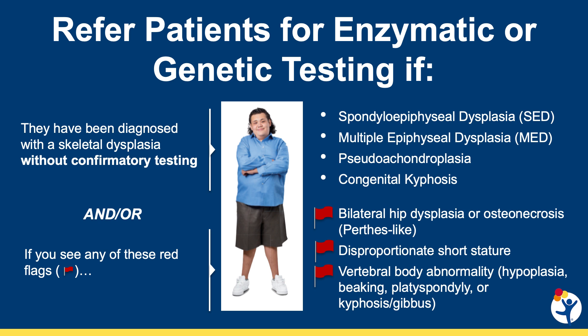When would one want to refer for evaluation of skeletal dysplasia, either for clinical evaluation or genetic testing? If a child has a skeletal dysplasia that has not been identified molecularly, that would be a reason to refer. For a previously undiagnosed form of short stature, one would look for red flags including disproportionate short stature, bilateral hip osteonecrosis or Perthes disease, or vertebral abnormalities resulting in lumbar gibbous spinal deformity.